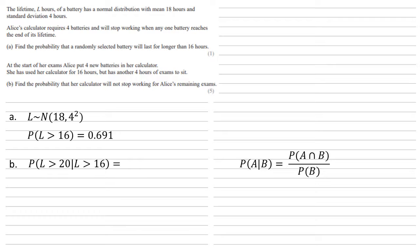If the battery is lasting longer than 20 hours, it's already lasted longer than 16. So the intersect of larger than 20 and larger than 16 is just larger than 20. We're going to do the probability of L larger than 20 divided by the probability of L larger than 16.